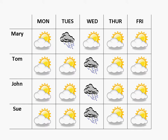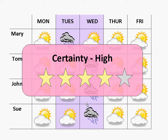To help understand this, let's consider a weather analogy. Assume you want to know when it's next going to rain. You may consider five-day forecasts from four different meteorologists. Notice that all four forecasts agree that it will next rain either on Tuesday or on Wednesday. If you had to pick a single date, you would likely say Wednesday. Because all forecasts generally agree, we say there is a high degree of certainty in this estimate.